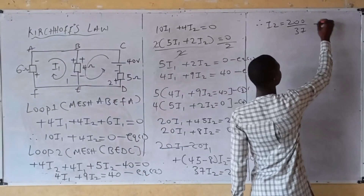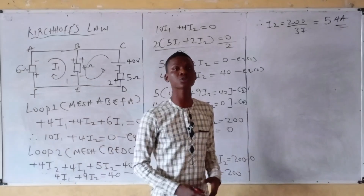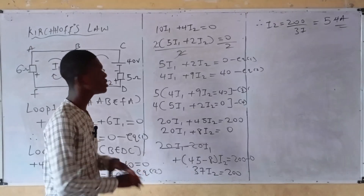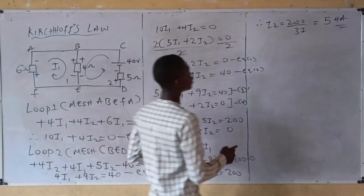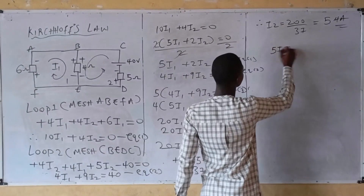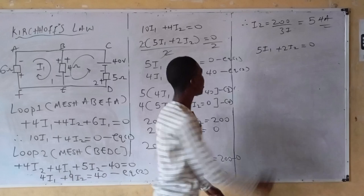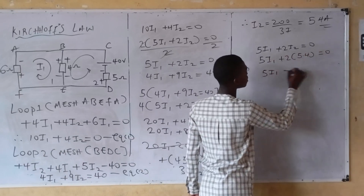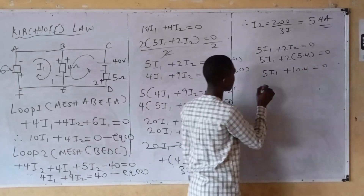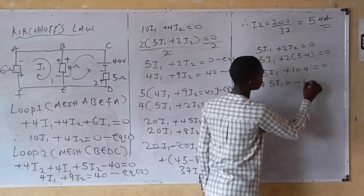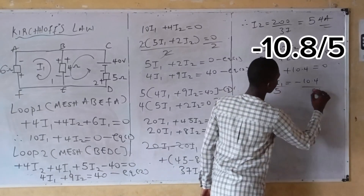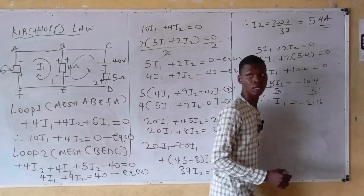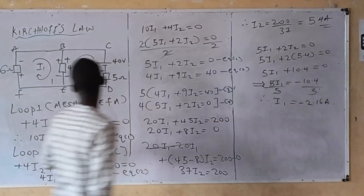Substituting the value of I2 into equation one: five I1 plus two I2 equals zero. That gives five I1 plus two times 5.4 equals zero, so five I1 plus 10.4 equals zero. Making I1 the subject: five I1 equals negative 10.4, so dividing both sides by five gives I1 equals negative 2.16 amperes.